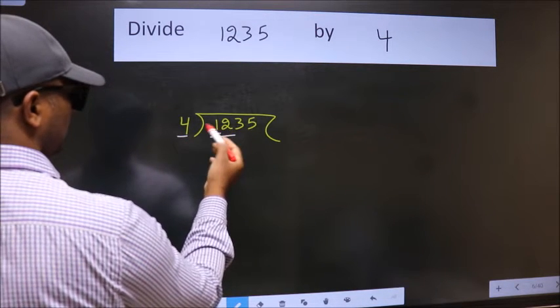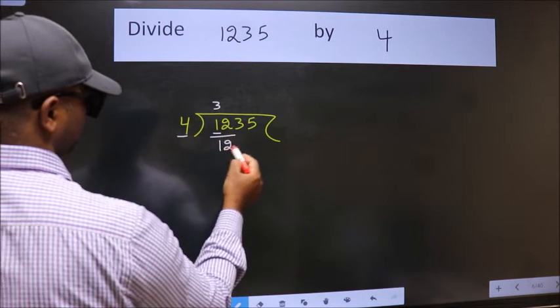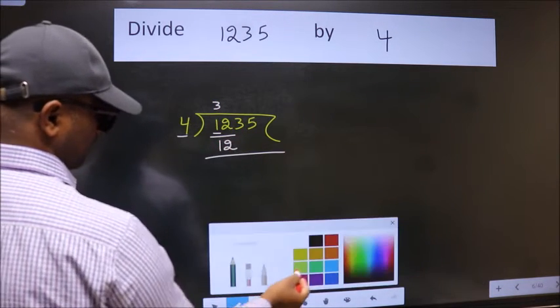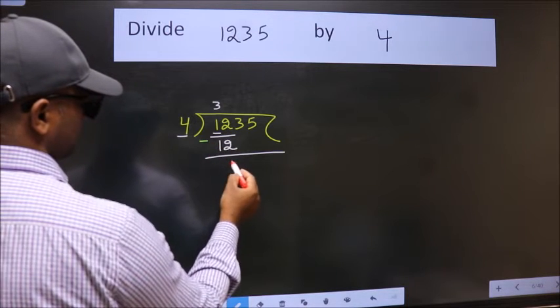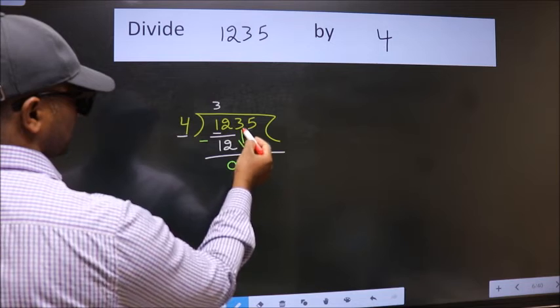When do we get 12 in the 4 table? 4 times 3 is 12. Now we should subtract. We get 0. After this, bring down the beside number. So 3 down.